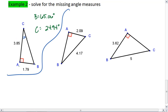For the next one, I'm going to go ahead and start with angle B. This gives me an opposite side and hypotenuse. So I'm using sine. Sine of B equals 2.09 over 4.17.